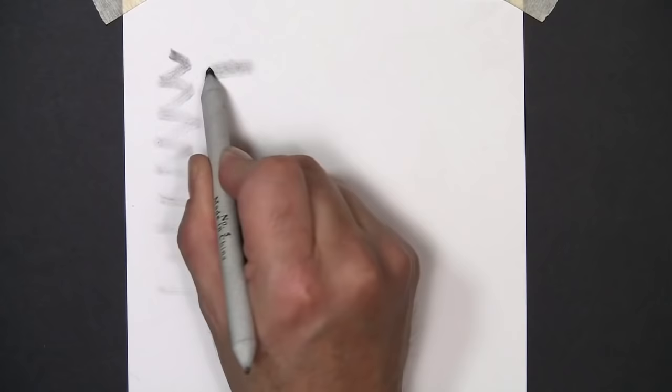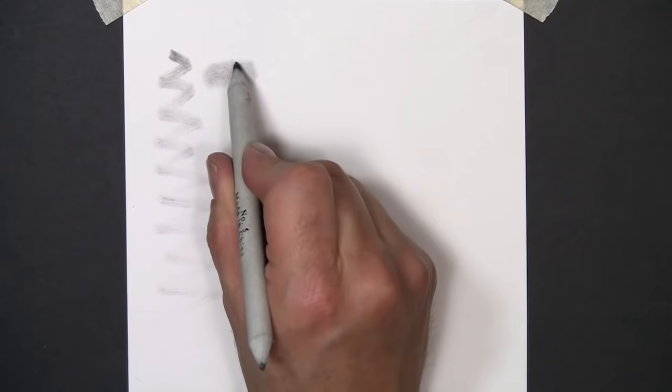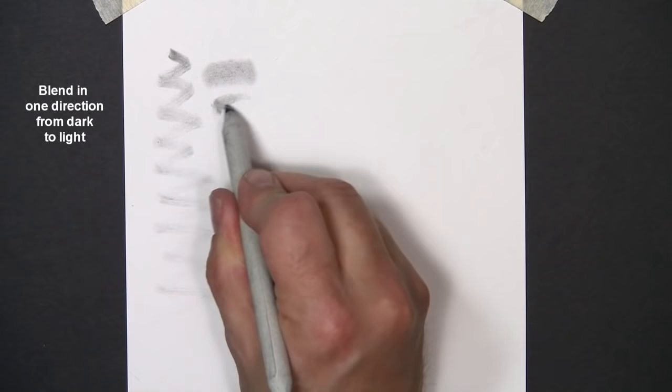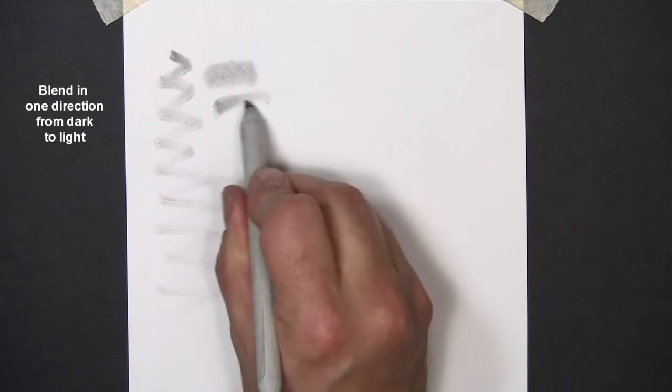So I normally blend from dark to light, so I would start in the darkest area, just start a dark value here, and I blend towards the lighter area, like going from a shadow towards the light, and it gradually gets lighter as I proceed.